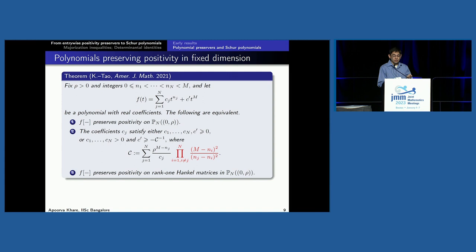A couple of remarks: this holds even if the powers or exponents are not integers — there's some relaxation, for which you can look at the paper. The baby case where the initial exponents are just 0 through n−1 was in fact the first time we observed these examples exist, in 2016, and then the general case was solved about five years later.